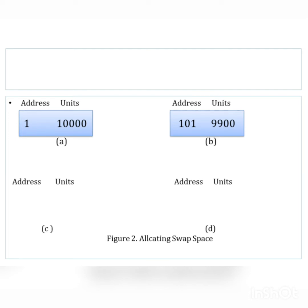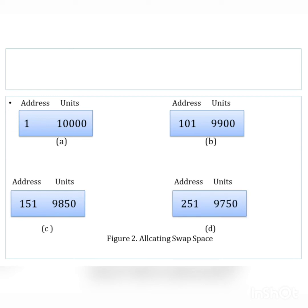Process two requests 50 units, so we update the address field from 101 to 151, and decrement the total available units because we have already allocated to process two. The final count after allocating process two is 9,850 units.